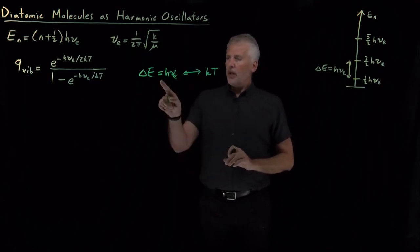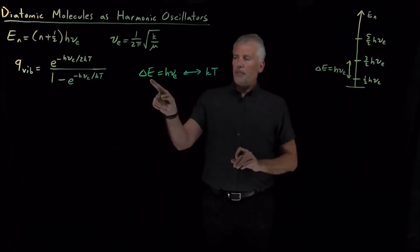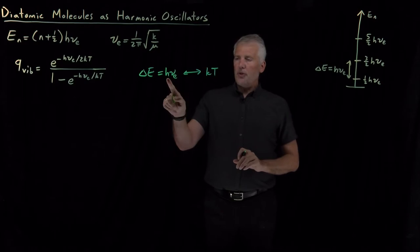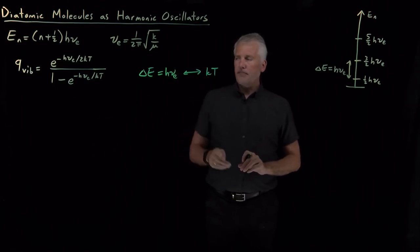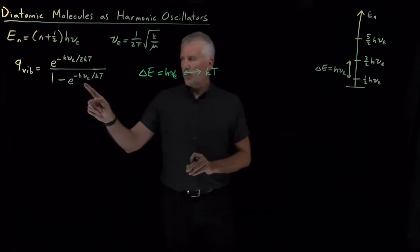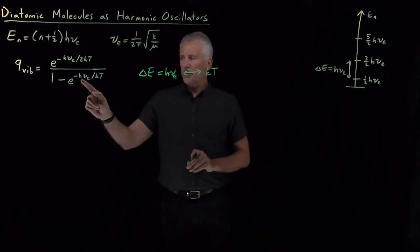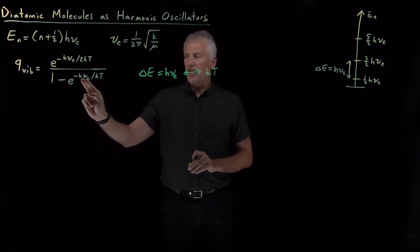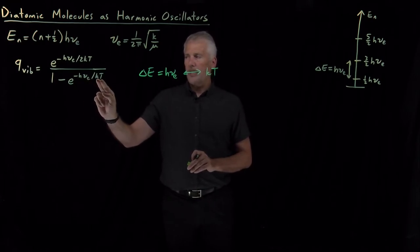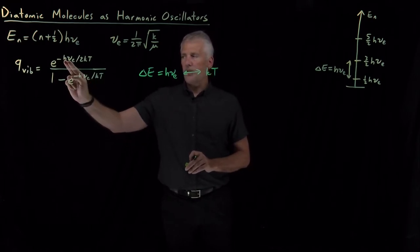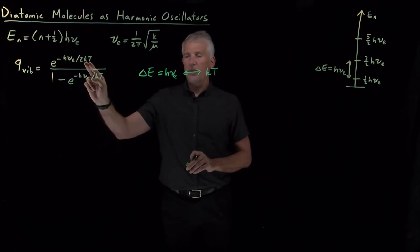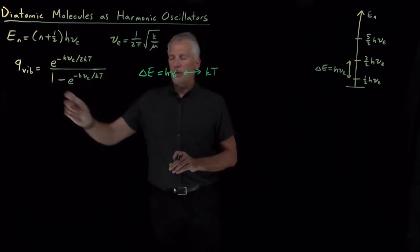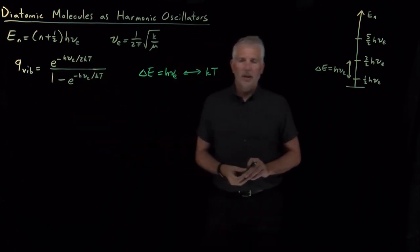So we could ask whether hν is large compared to kT. Looking at the partition function, that's going to affect the size of this exponent. Is hν large compared to kT? Is hν large compared to 2kT? That's going to affect the size of the partition function.